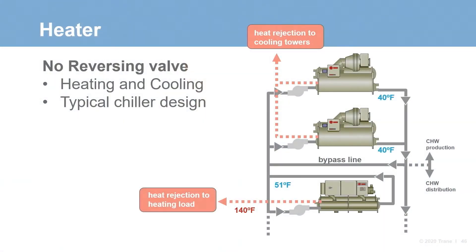Next is the heater. A heater is the same machine as a heat recovery chiller, but is applied with heating being its primary function and chilled water is the useful byproduct. Here we see the heater piped in a sidecar arrangement. These units control to a heating water set point and get what they get on the chilled water side, as the cold water is being sent to the return of the main chiller plant. Common uses are similar to heat recovery, but the load dictates which application is appropriate.